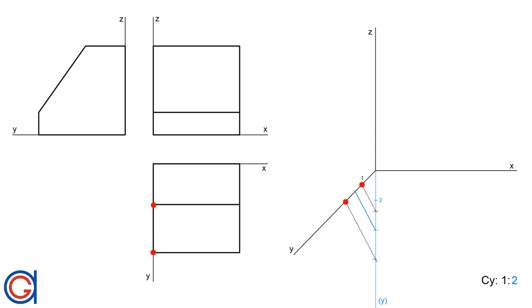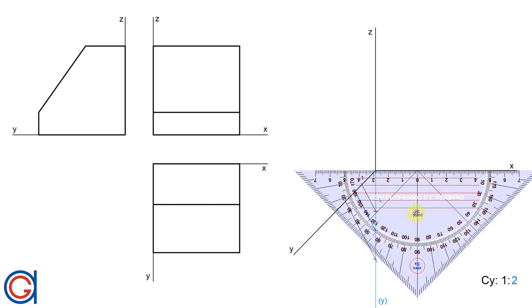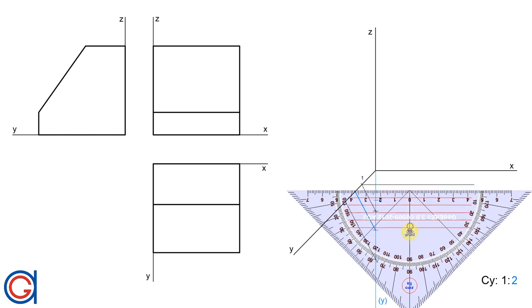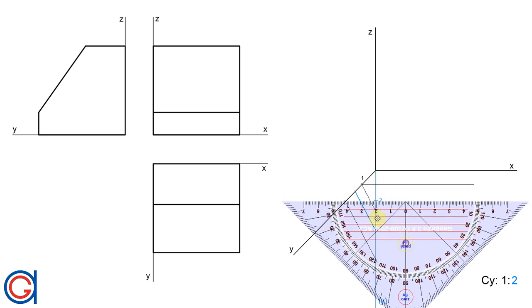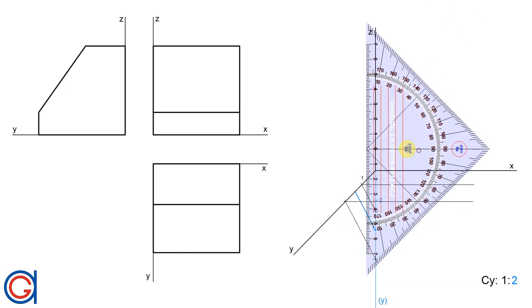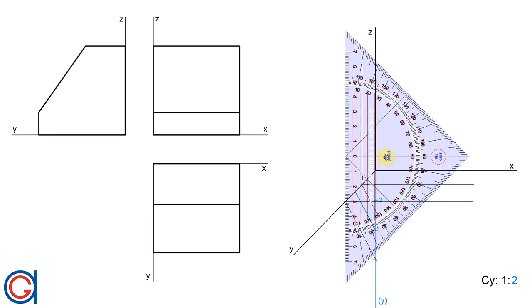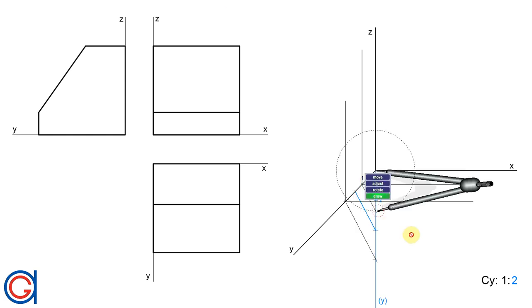Here you can see in red the equivalent points in the plan view and in the cabinet projection. The next step is to draw parallel construction lines to the X axis from our two new points, and then vertical lines parallel to the Z axis from the two new points as well, as can be seen here on the screen.